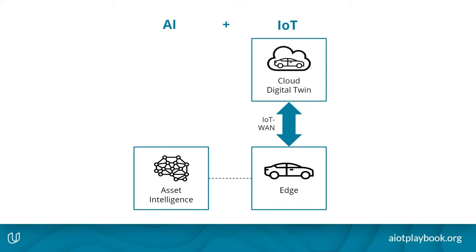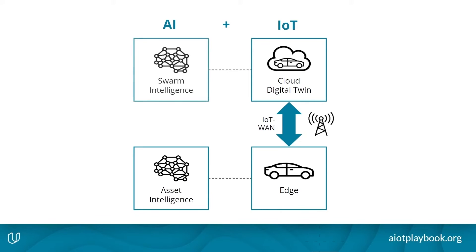Things start getting more fun when we connect our assets to the cloud using IoT technologies, and then in the cloud also using a digital twin to manage our physical assets. For this, of course, we need the connectivity. Once we have this, we can also apply swarm intelligence — a kind of intelligence that really relates to an entire fleet or swarm of assets or products in the field. And that together is really what AIoT is all about.